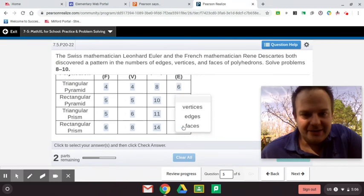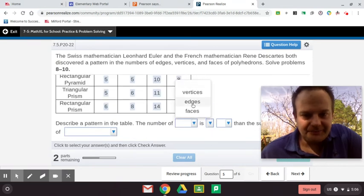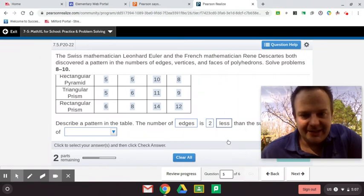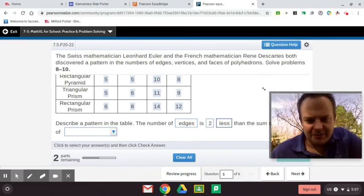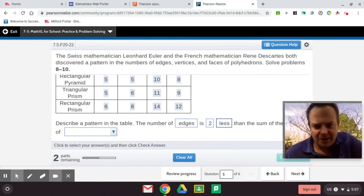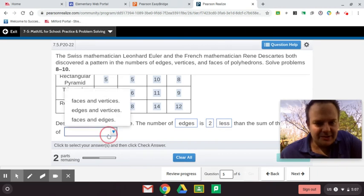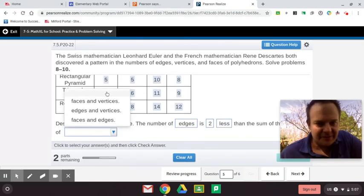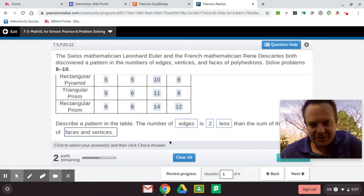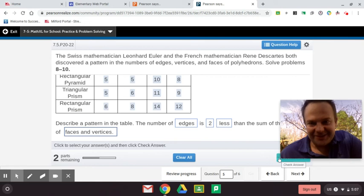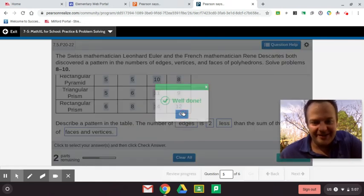So the number of edges are two less than the sum of the faces and the vertices. Look at that guys. And now that's going to come into play right now. Describe the pattern in the table. The number of edges is two less than the sum of the faces plus the vertices. Now that question, you're going to see a lot throughout school. That relationship, you'll see that again next year in seventh grade and probably eighth grade too in geometry.